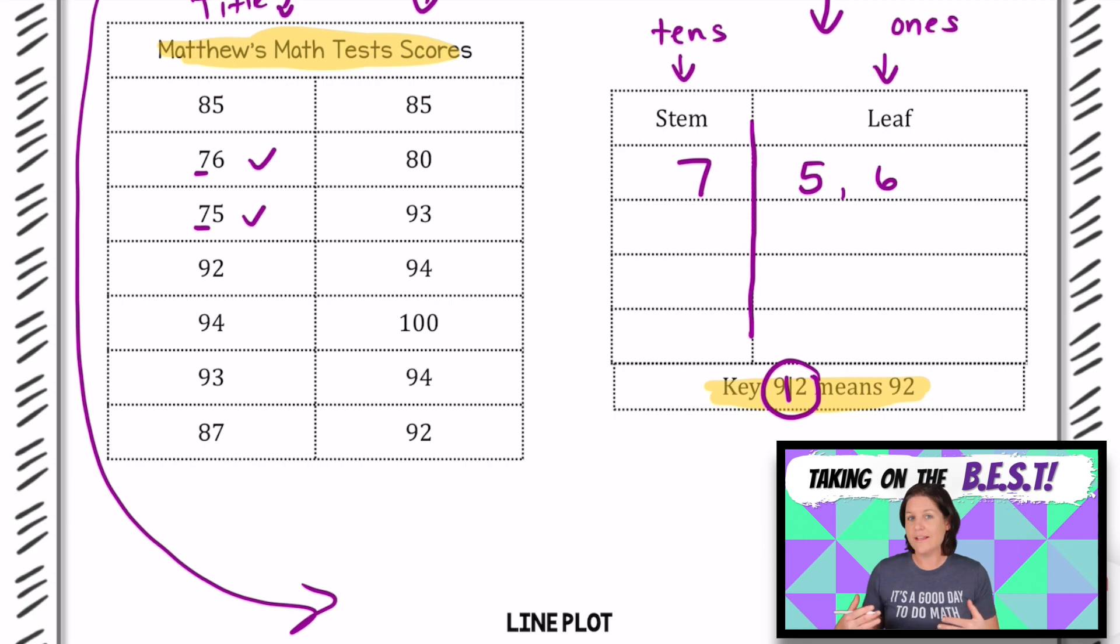Do you see any more test scores that have a 7 in the tens place? No. So let's move up to the next 10. Let's find all the test scores that have an 8. We have 85, 87, 85, 80. Starting with our 8 as the stem, that stands for 80. And we need to make sure that we put these in order. The first one would be 80 with a 0.